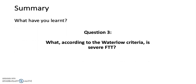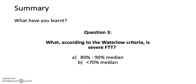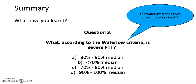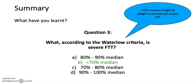Question 3: What, according to the Waterlow criteria, is severe FTT? a) 80–90% median, b) less than 70% median, c) 70–80% median, or d) 90–100% median. The answer is less than 70% median.